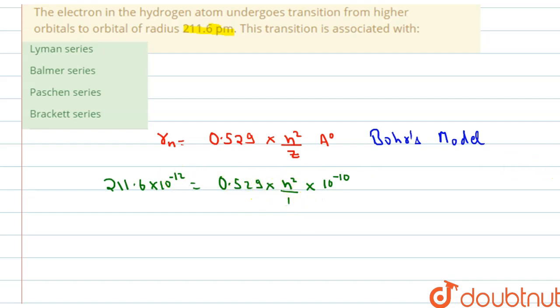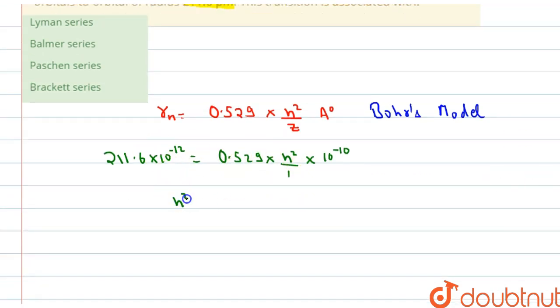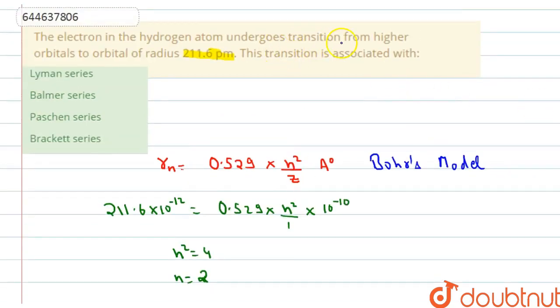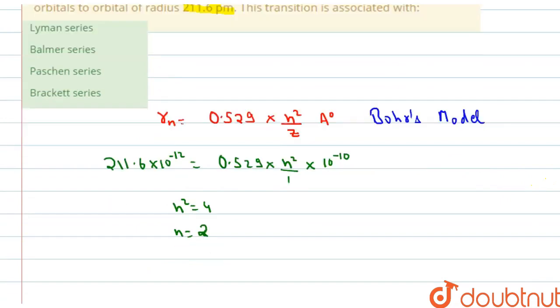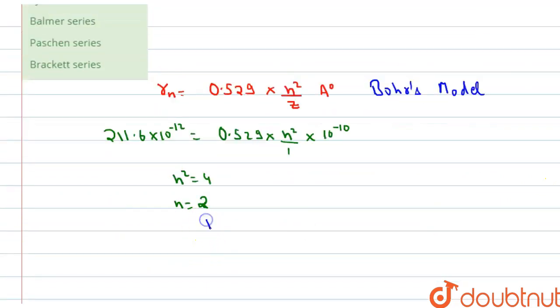We will get n square equals 4 and n will be equals to 2 here. So this is the series in which we don't know about the higher orbital, but the orbital in which the electron is coming is the second orbital. So we will say there are some electrons which is coming from n2 to n1, where n1 is the second orbital. We don't know the n2.